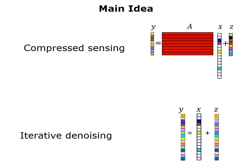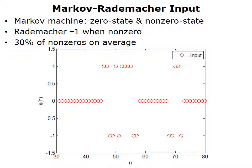We refer to this as a universal algorithm. Our main idea is to convert the linear inverse problem, or compressed sensing problem, to an iterative denoising problem, and we do so using the approximate message passing framework.